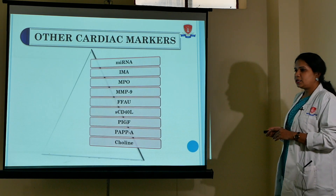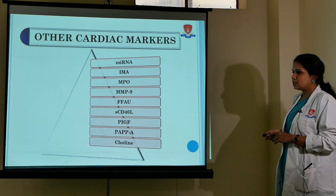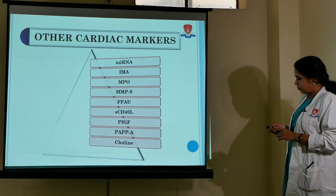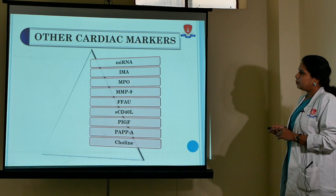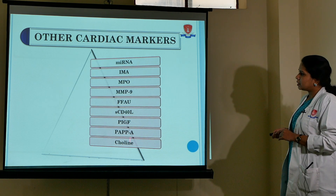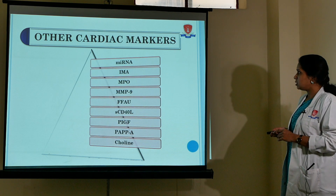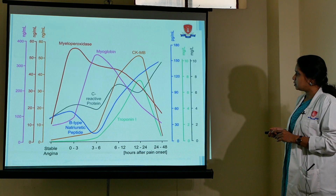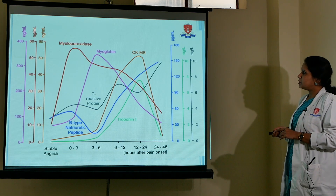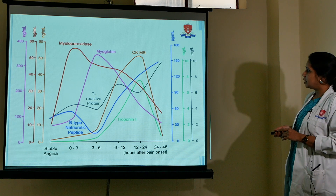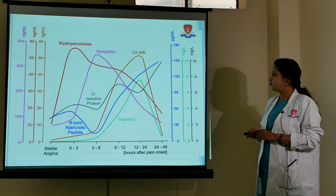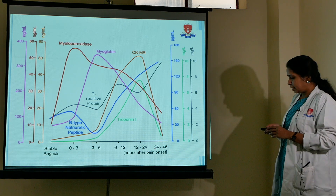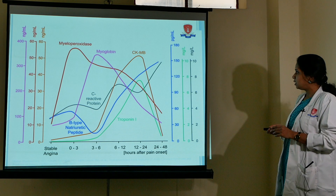There are certain other cardiac biomarkers such as miRNA, IMA, and MPO, which will be discussed in another lecture series. Today, just a list of these markers is presented. A diagrammatic representation of the various markers can be found in various reference books and articles, clarifying the need and requirement of these cardiac biomarkers.